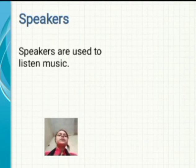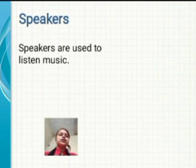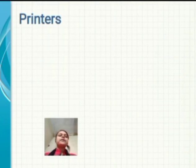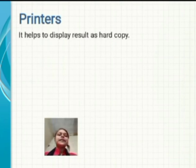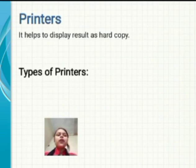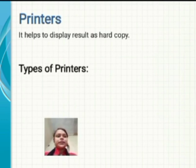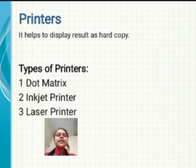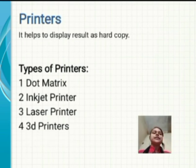Speakers are used to listen to music. Next, printer: a printer helps to display the result as a hard copy. There are four types of printer: first is dot matrix, second is inkjet, third is laser printer, and fourth is 3D printer.